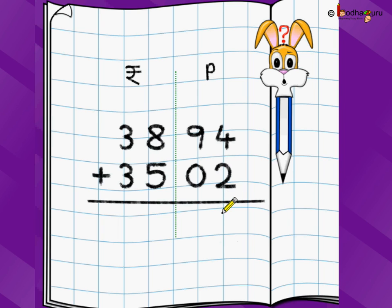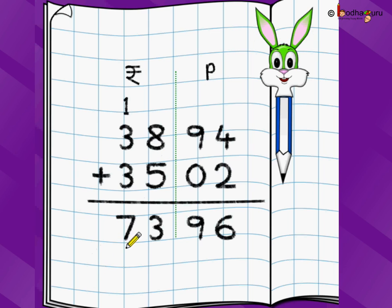So 35 we write here in the rupee area and 02 paisa. And now, if you look very carefully, this problem looks like a 4 digit addition problem. Start from 1's position of paisa from the rightmost position and then we add 4 plus 2 is 6, 9 plus 0 is 9. Then we move to the rupee area. We now do addition of these 2, 8 plus 5 is 13. 1 goes here, 3 plus 3 is 6 and 1 is 7. So we have 73 rupees and 96 paisa in total.